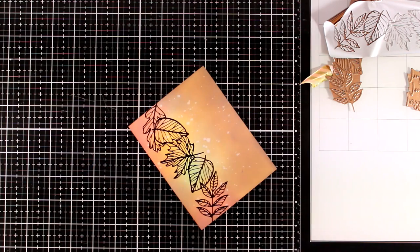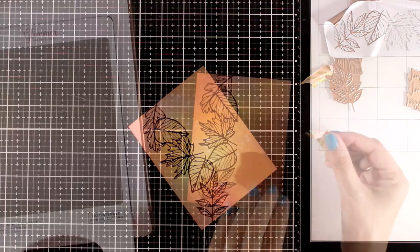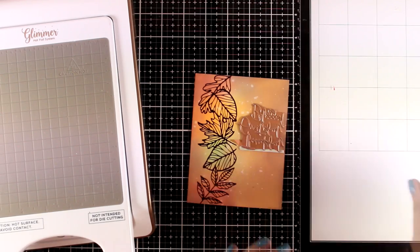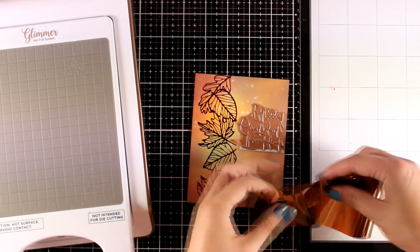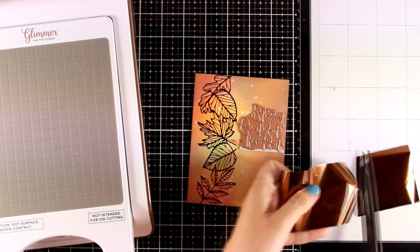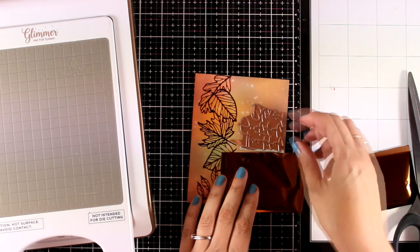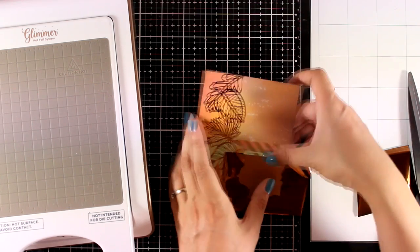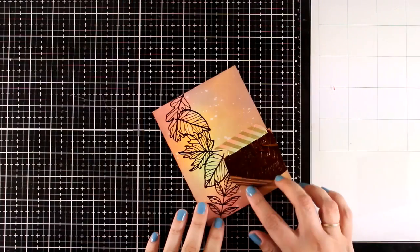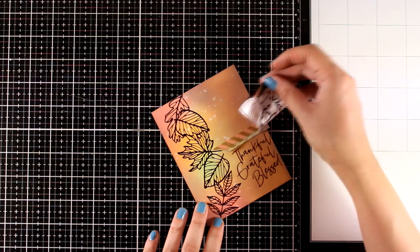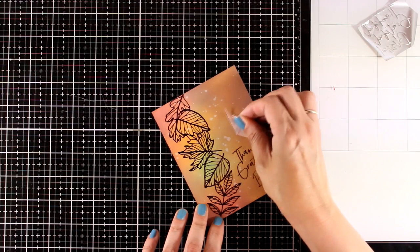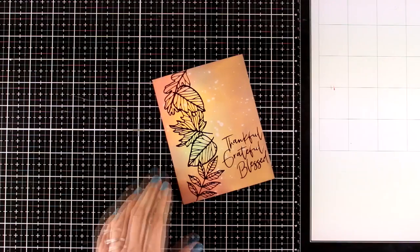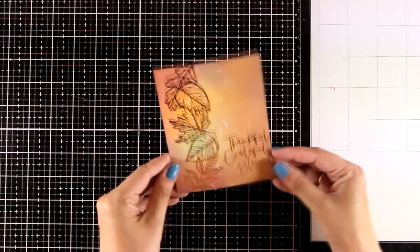Now I'm going to do some more foiling on the same panel, again using the same color of foil and my sentiment. Of course, I could have done it previously with one step—foil both of these plates—but for this card I didn't have a plan from the beginning. Most of the time it's like that. I just go by the flow, see how the first step looks, and take it from there.